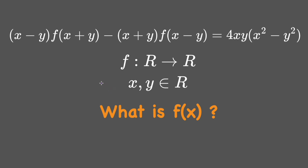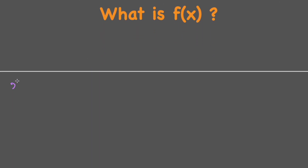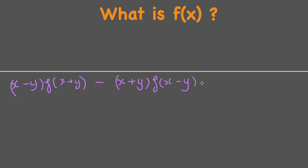Now let's get started. First of all, we have to rewrite the problem: (x minus y) multiplied by f(x plus y) minus (x plus y) multiplied by f(x minus y) equals 4xy times (x squared minus y squared).